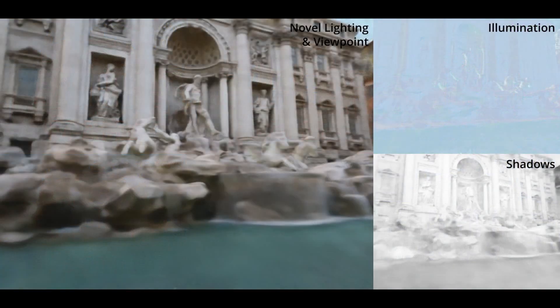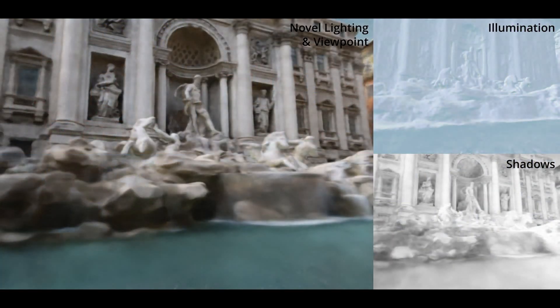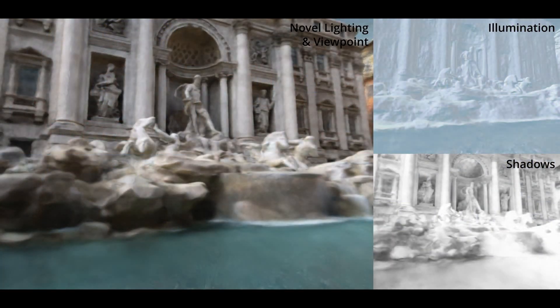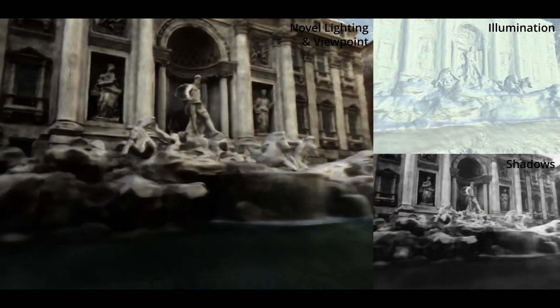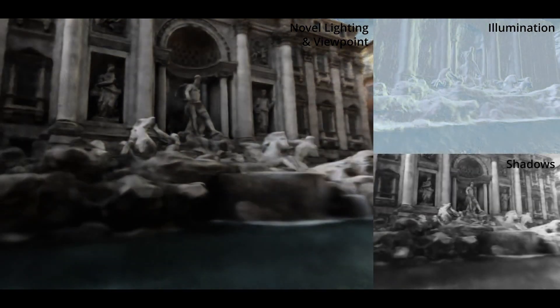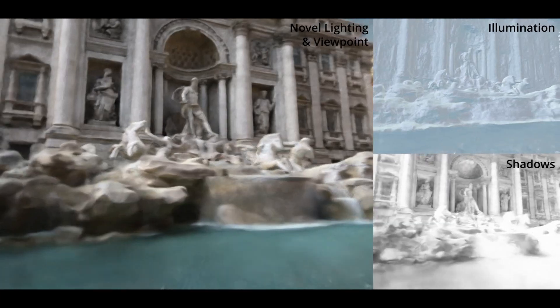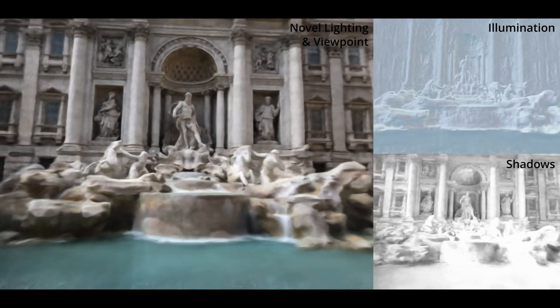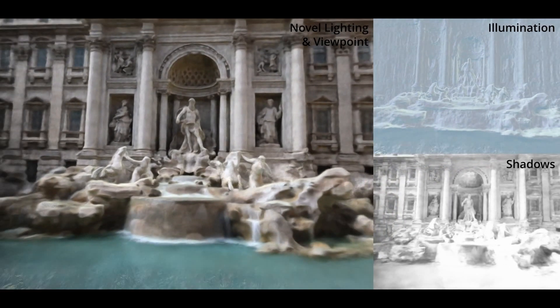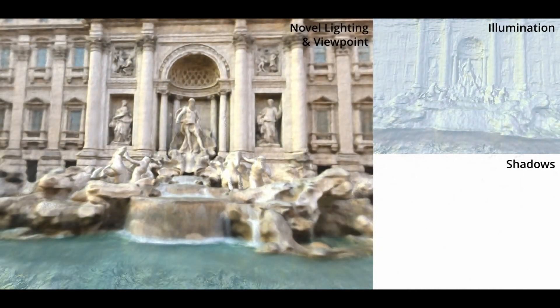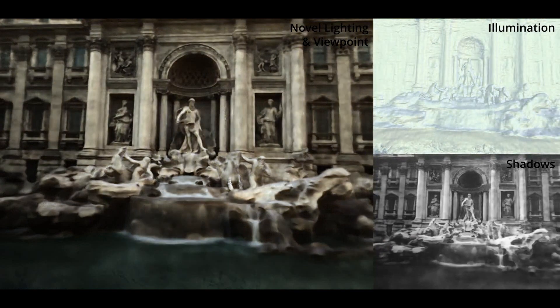Gray Fountain contains large and small-scale details, such as the sculptures, water, and surrounding buildings. Furthermore, it shows performance on data collected completely from the Internet through crowdsourcing.